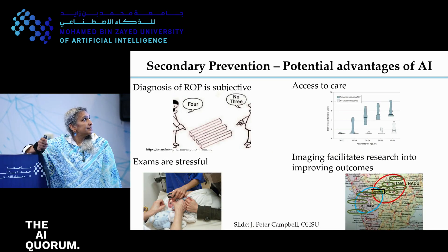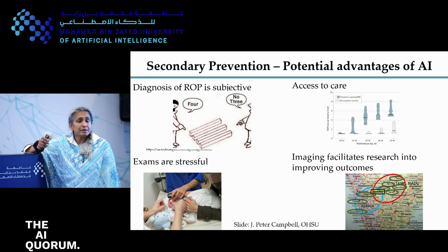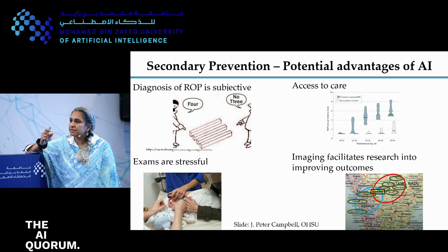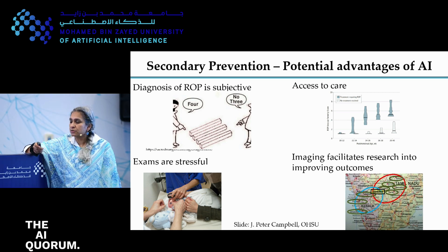We've shown that our algorithm can help with the inter-rater agreement issue, improve access to care, reduce the number of follow-up visits, and improve outcomes. We've looked at hospital systems and used this model to quantify disease severity across hospitals — and found a hospital that wasn't performing as well. We went back to examine what was going on and found they didn't have enough oxygen monitoring. We went back two years later and found that a lot of those issues had been fixed.